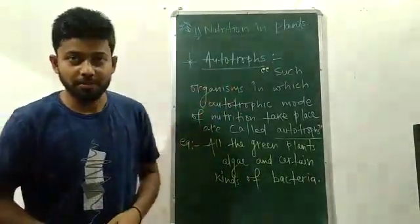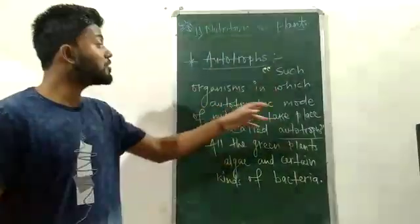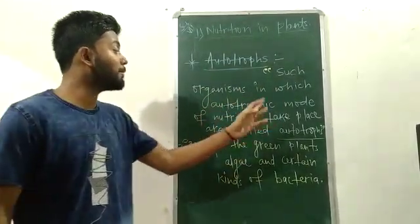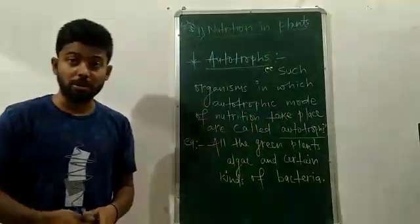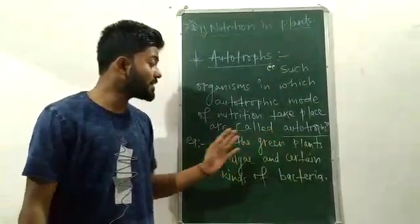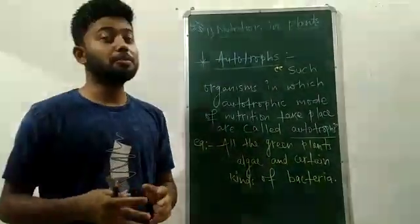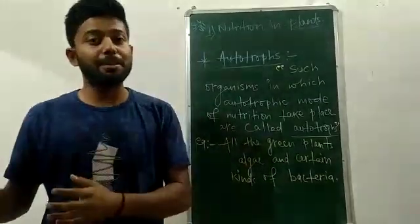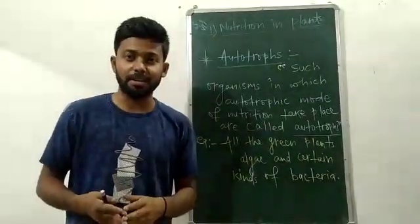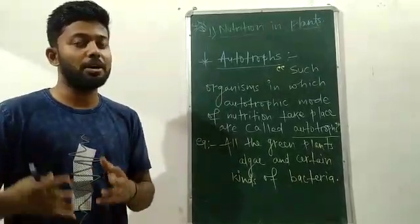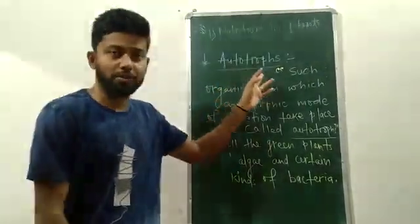The next is autotrophs. Such organisms which have autotrophic mode of nutrition are called autotrophs. Here are examples: all the green plants, algae, and certain kinds of bacteria. These are all organisms who prepare their food themselves and don't depend on others. We call them autotrophs.